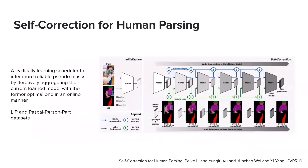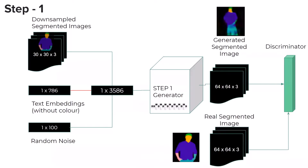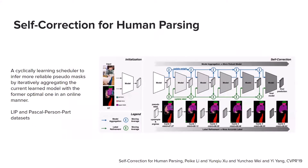Coming to how the model performs segmentation: it uses a cyclic learning scheduler, published at CVPR last year. It infers more reliable pseudo labels by iteratively aggregating the current learned model with the previous optimal one in an online manner. This model was trained on two datasets: LIP and Pascal-Person-Part.